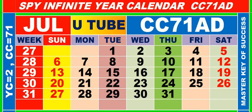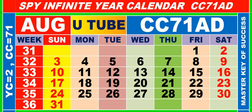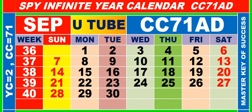Calendar for the month of July, having calendar code equal to 71. Calendar for the month of August, having calendar code equal to 71. Calendar for the month of September, having calendar code equal to 71.